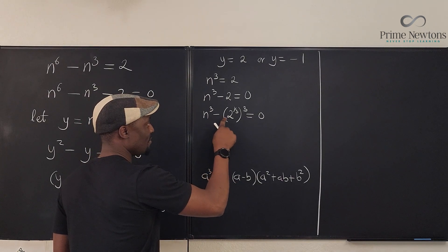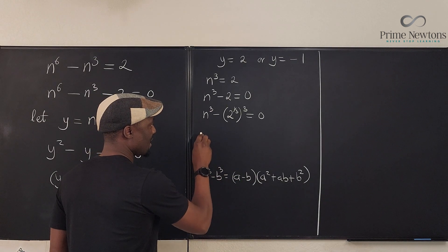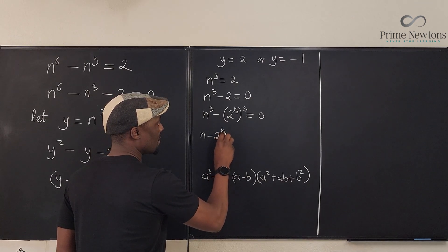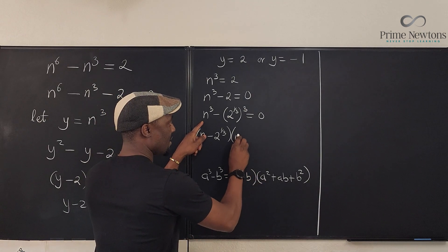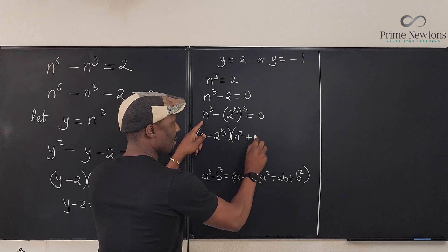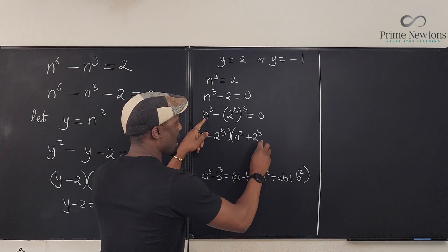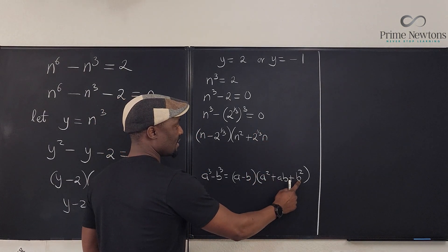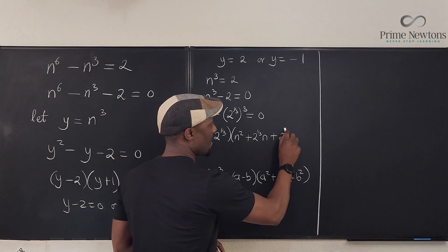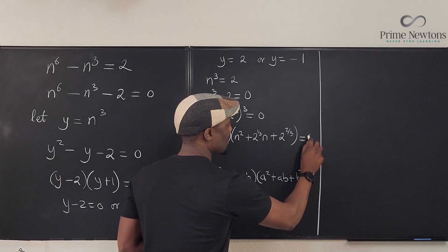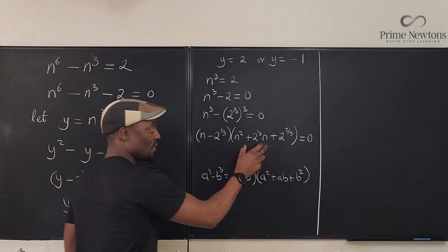So, here we go. We're going to use it here. So, this cubed minus this cubed is going to be equal to this minus this, that is n - 2^(1/3), multiplied by a squared, which is n^2, plus ab, which is n times this, which is 2^(1/3)n, plus the square of this. If you square 2^(1/3), it gives you 2^(2/3). And you have 0 on this side. Okay. So, it means this is equal to 0, or this equals 0.